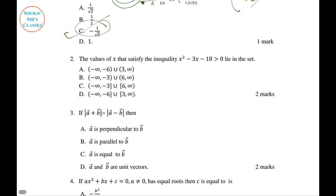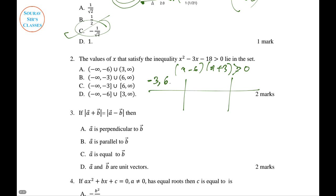Question 2: Find the values of x that satisfy the inequality. We have x² minus 3x minus 18, which factors as (x minus 6)(x plus 3) greater than 0. Equating with zero gives x equal to minus 3 or 6. We split the number line into regions: x less than minus 3, then minus 3 less than x less than 6, then x greater than 6.